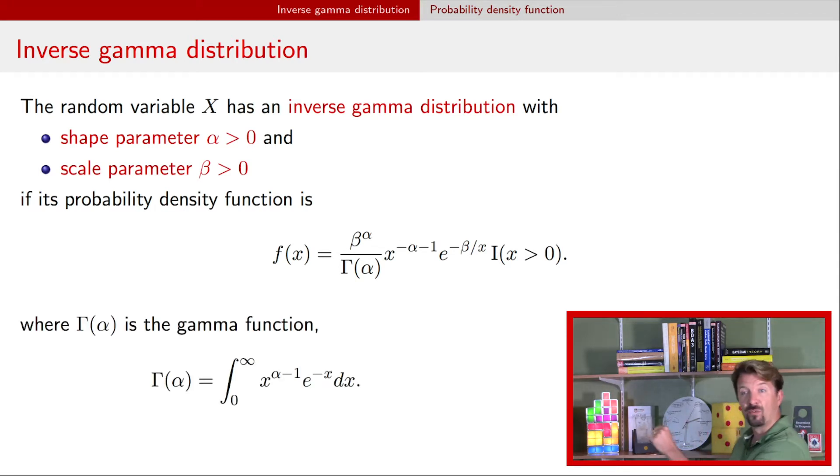This gamma function that's out front is defined by this integral right here, and we will refer to an inverse gamma random variable using this notation with a capital I, capital G for inverse gamma with the shape and scale parameter, in this case alpha and beta.